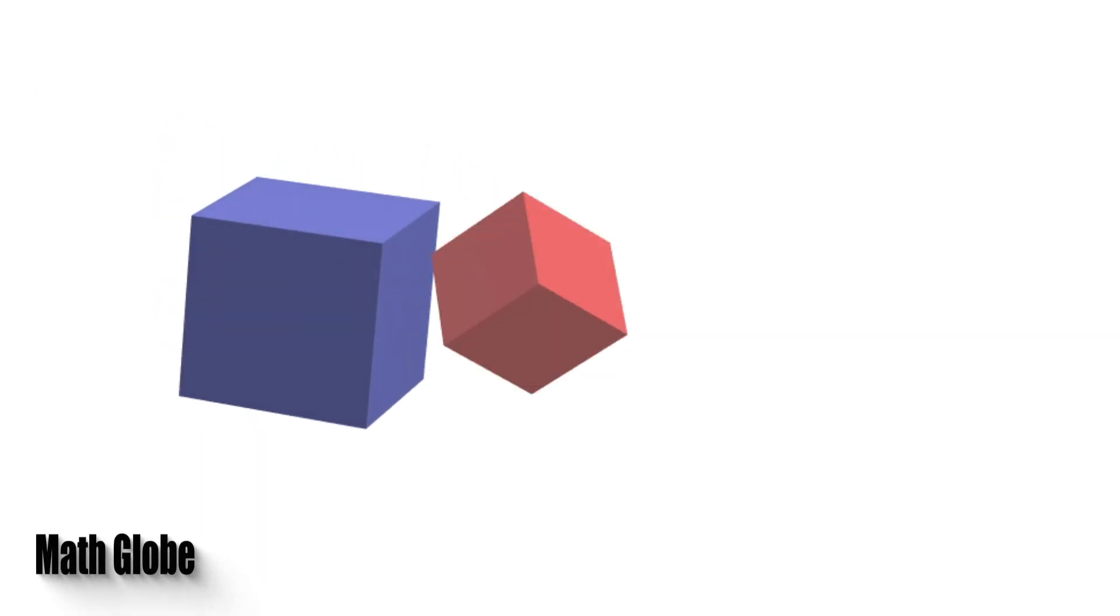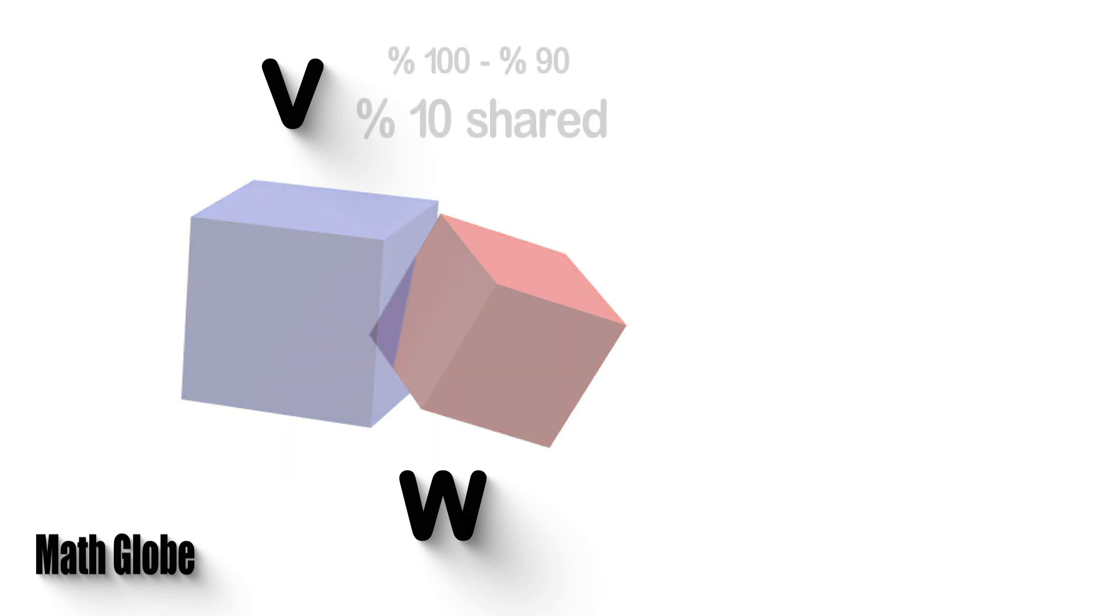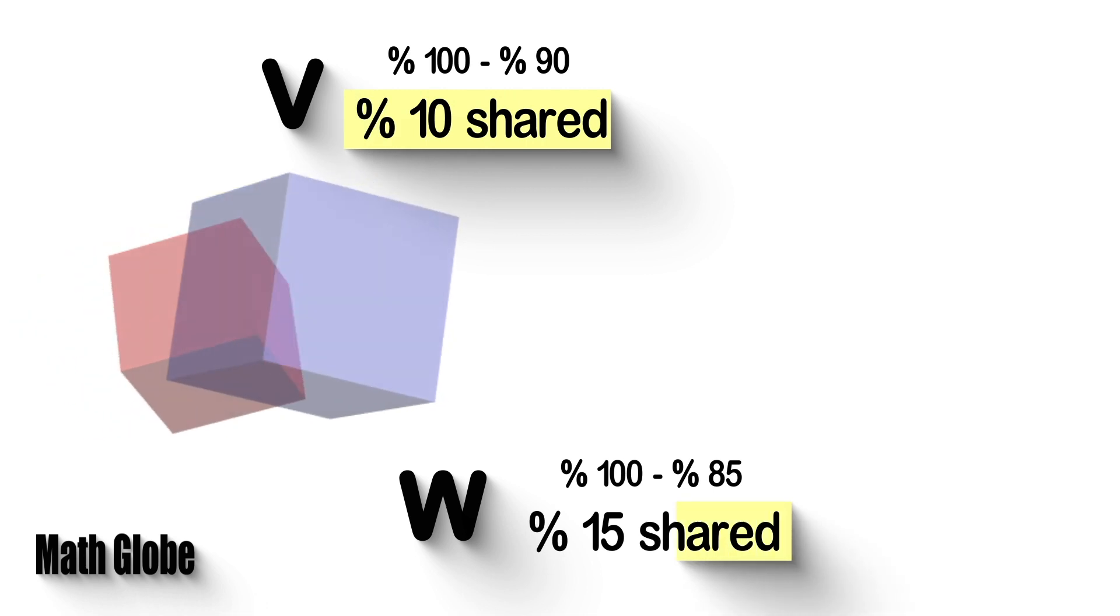Let the solution come. Ok first, let's take a closer look at these two cubes and the place they collide with each other. As you can clearly see, volume shared by the two occupies 10% and 15% of the cubes V and W respectively.